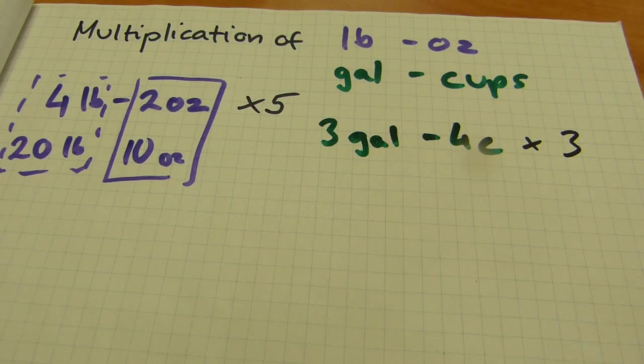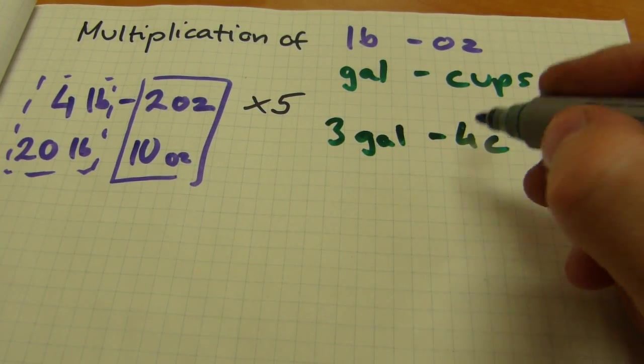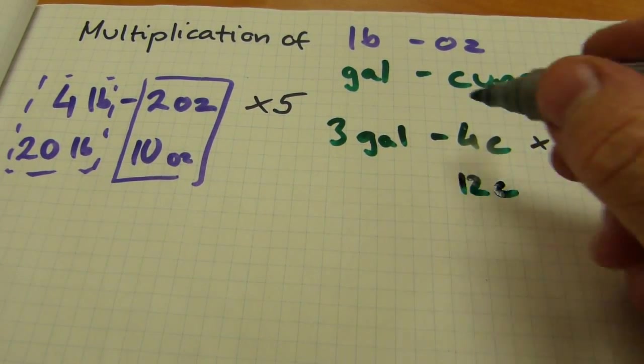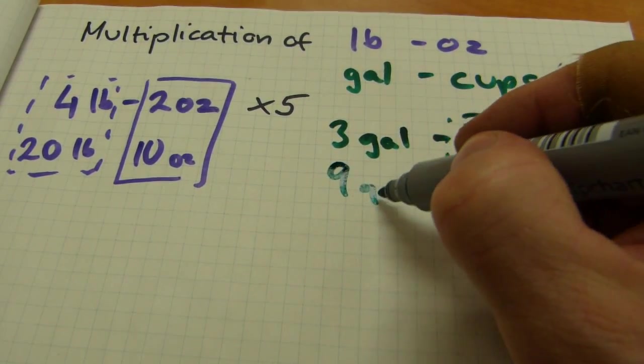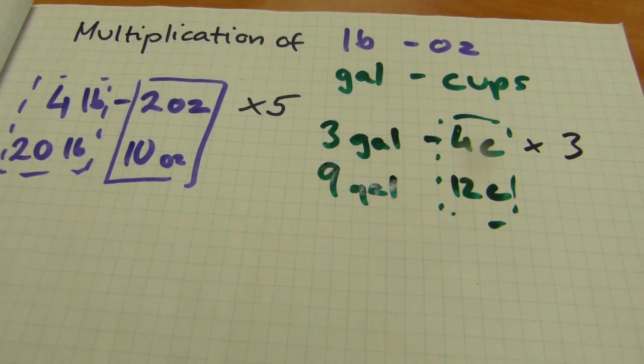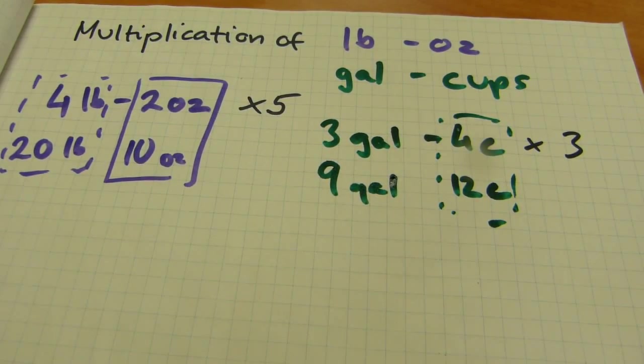There's not going to be a carry over in this one either. Three by four is twelve. And you write it down in the cups column here. And three by three is nine. The final answer is nine gallons and twelve cups. We're done with this one.